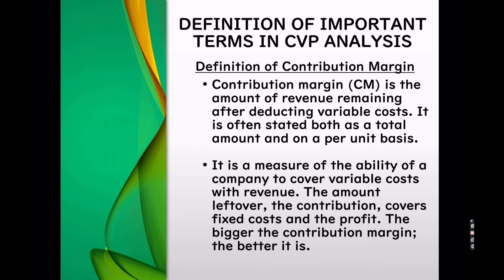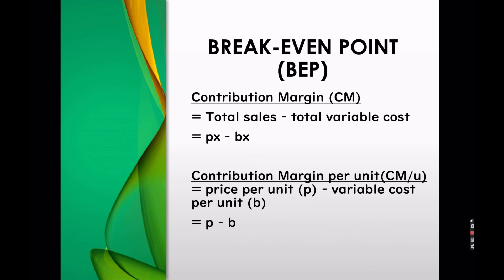Definition of contribution margin: Contribution margin (CM) is the amount of revenue remaining after deducting variable cost. It is often stated both as a total amount and on a per-unit basis. It is a measure of the ability of a company to cover variable cost with revenue. The amount left over — the contribution — covers fixed cost and the profit. The bigger the contribution margin, the better it is. Contribution margin equals total sales deduct total variable cost.